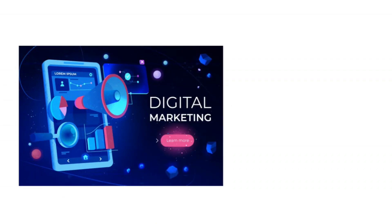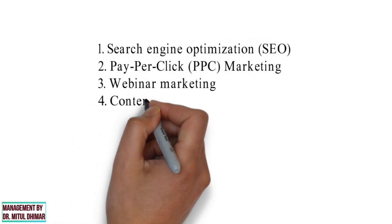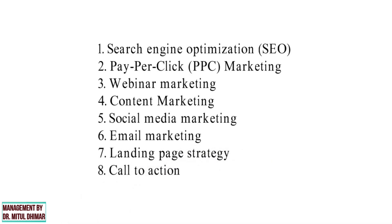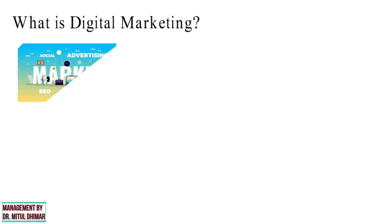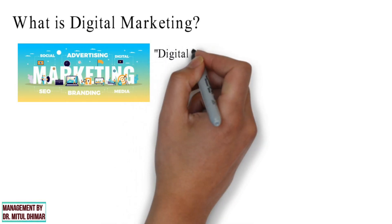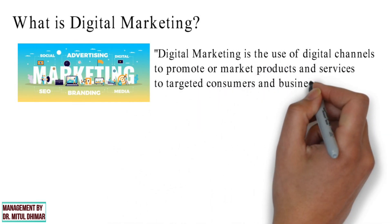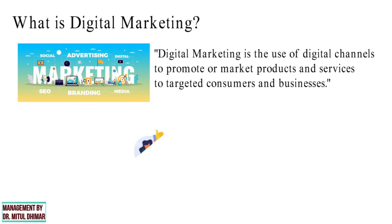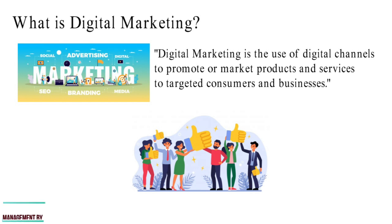Hello friends. Today we are going to study digital marketing strategies in detail, covering different points with examples for each. In simple terms, digital marketing is the promotion of products over the internet or any form of electronic medium. According to the Digital Marketing Institute, digital marketing is the use of digital channels to promote or market products and services to targeted consumers and businesses. The biggest advantage of digital marketing is that you can reach a larger audience in a shorter time.